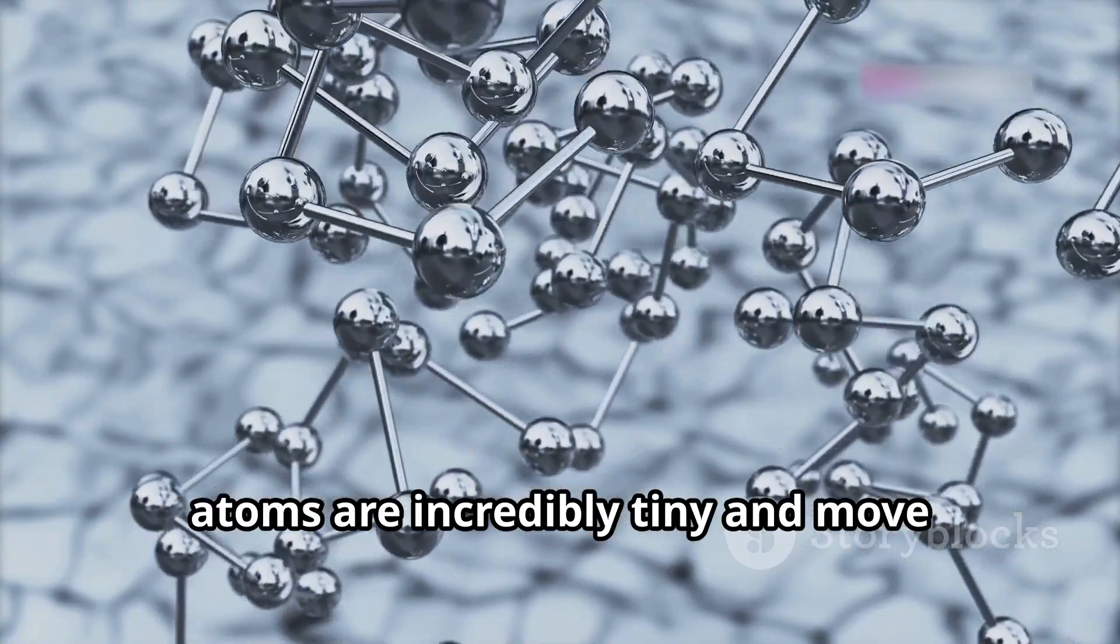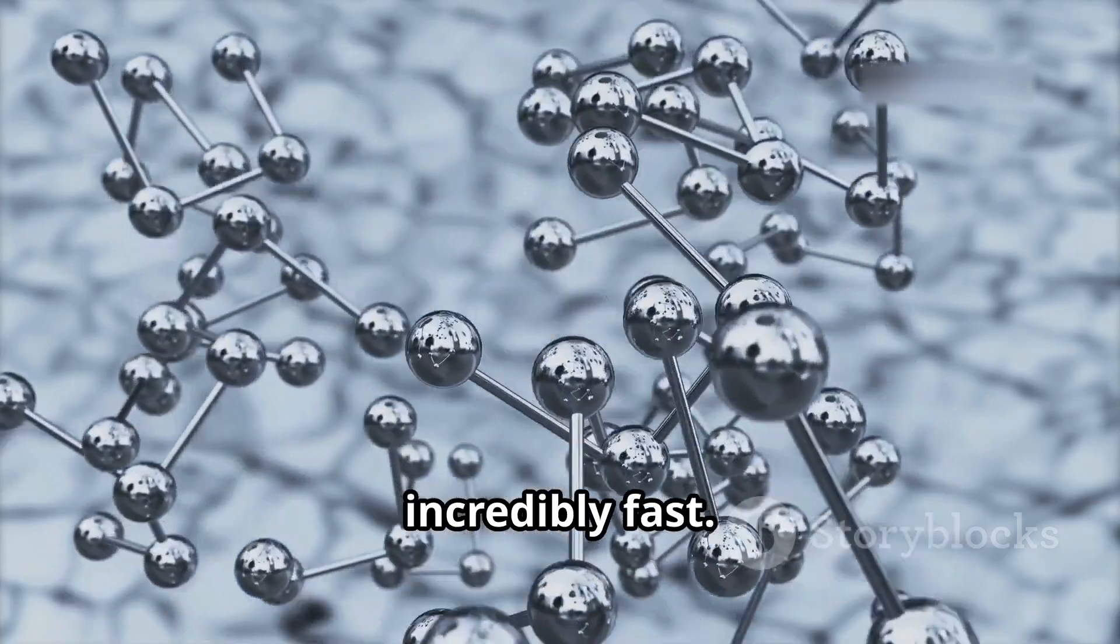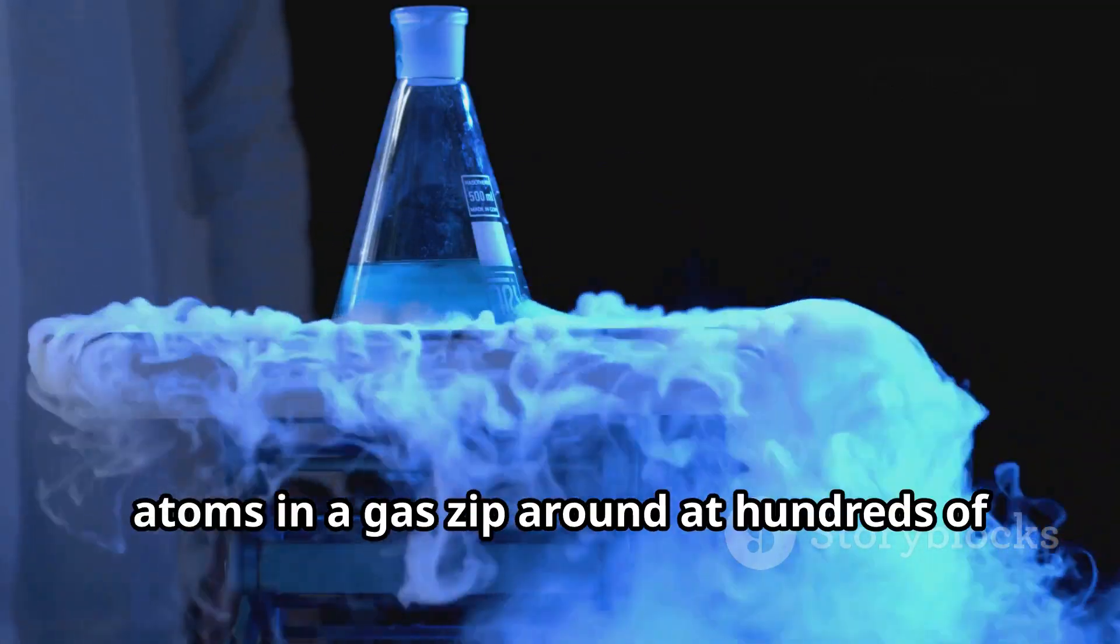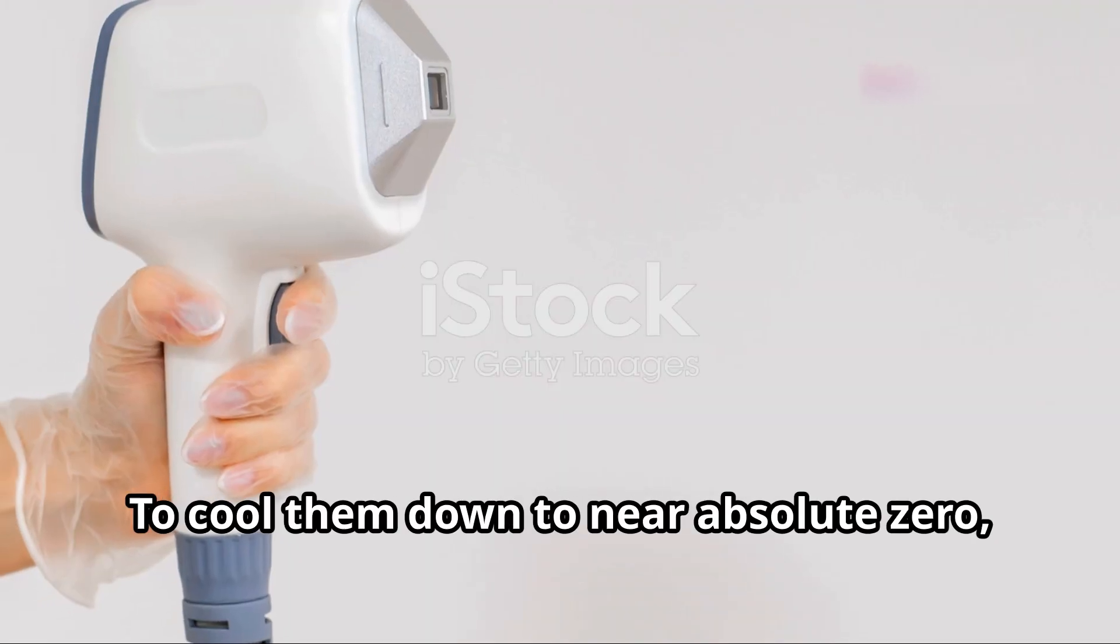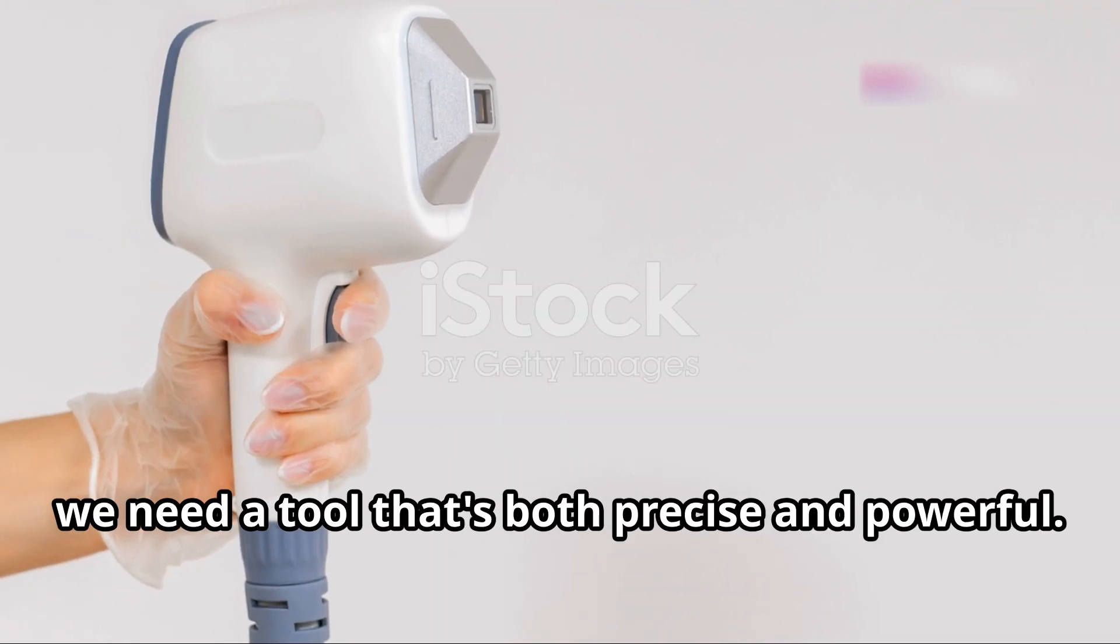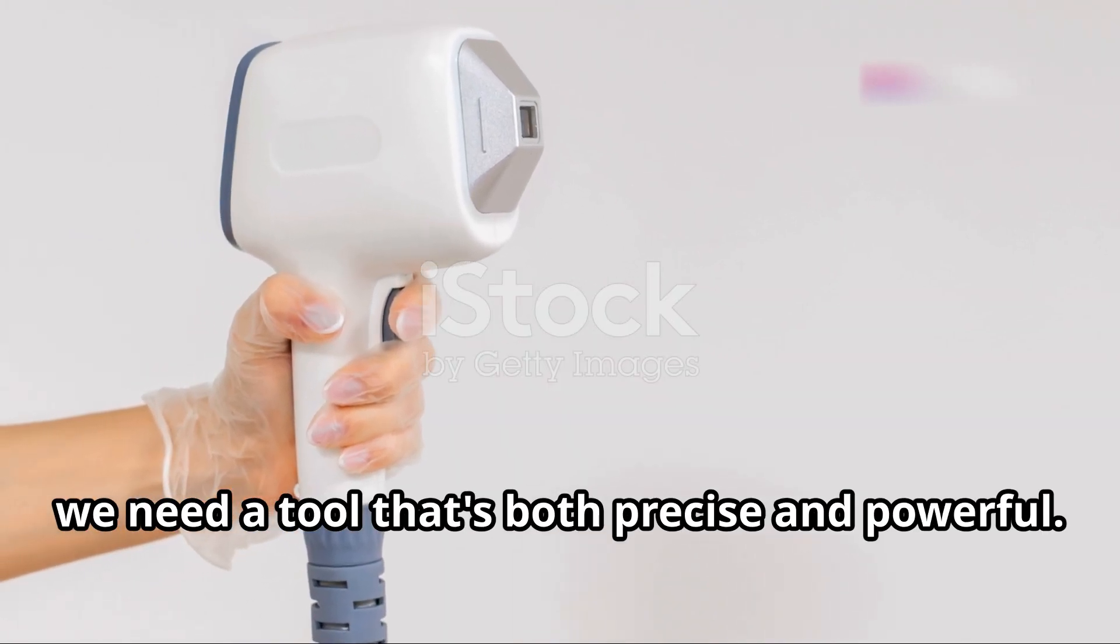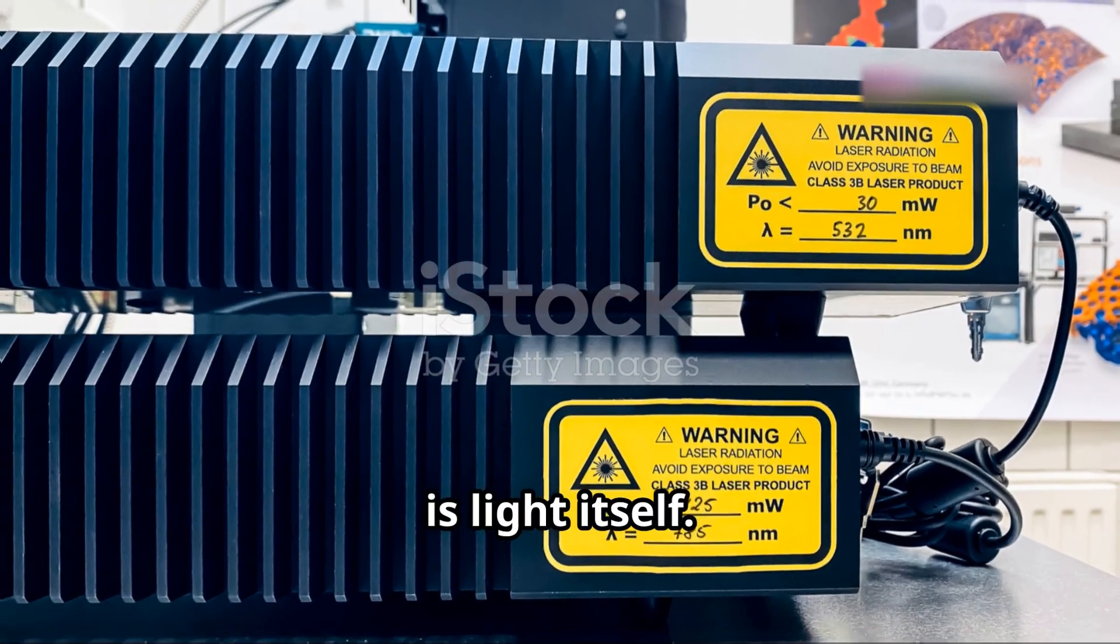However, unlike puppies, atoms are incredibly tiny and move incredibly fast. Even at room temperature, atoms in a gas zip around at hundreds of meters per second. To cool them down to near absolute zero, we need a tool that's both precise and powerful. That tool, surprisingly, is light itself.